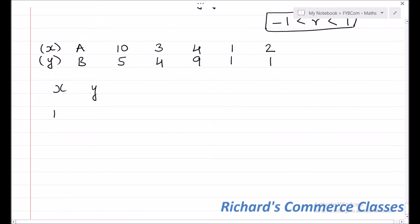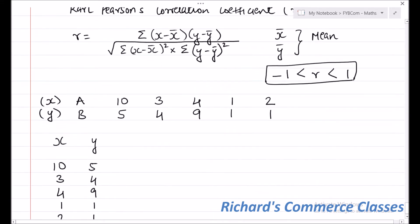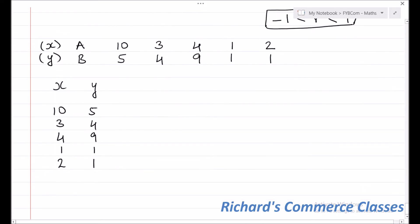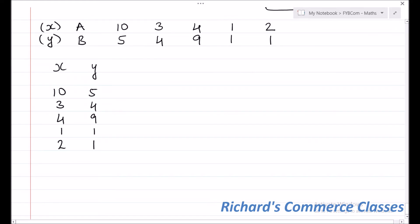The X values are 10, 3, 4, 1, and 2. The Y values are 5, 4, 9, 1, and 1. Looking at the formula, we need X minus X-bar and Y minus Y-bar, so our next columns will be X minus X-bar and then Y minus Y-bar.